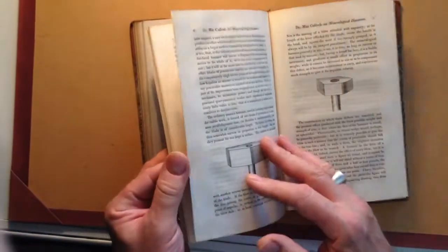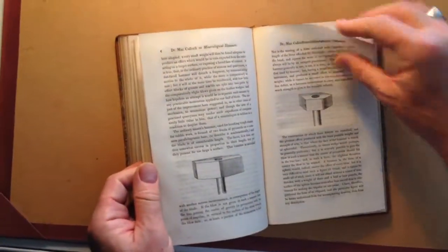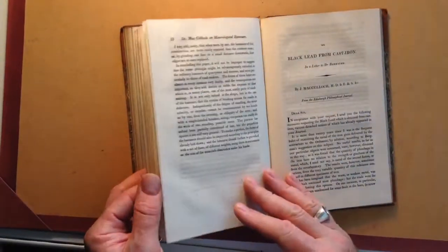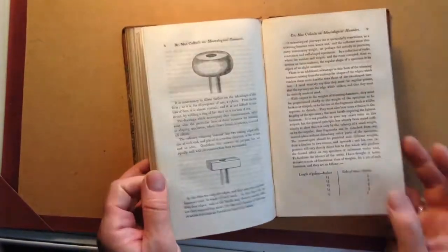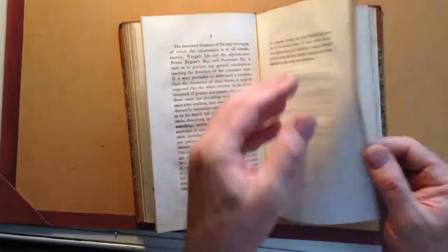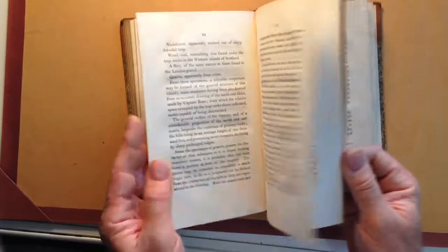There's a fascinating one on the optimum sizes of mineralogical hammerheads, okay, fossil hammers there, different types which are best for use. Black lead from cast iron, different sizes of print because they're different pamphlets, enumerated individually.